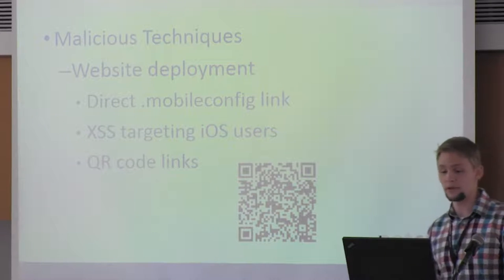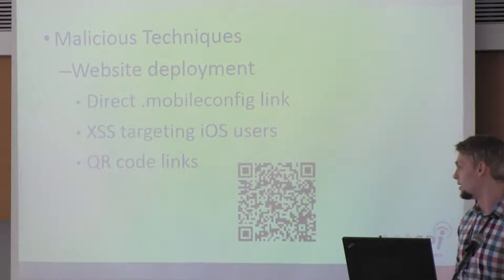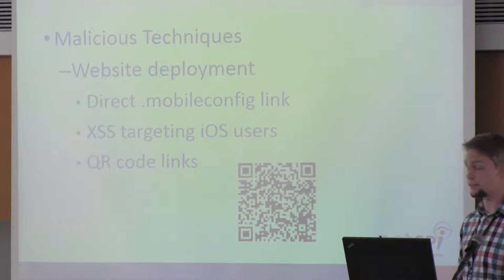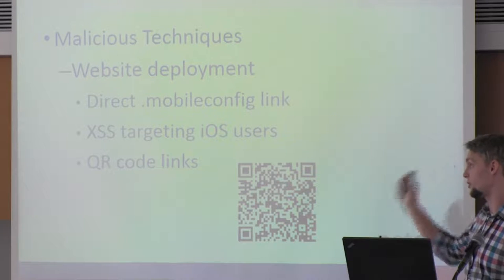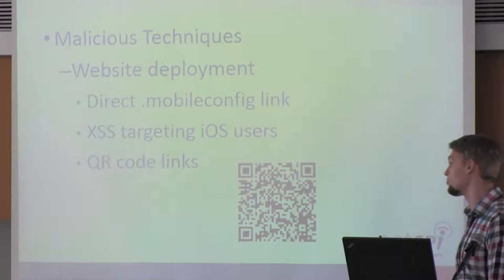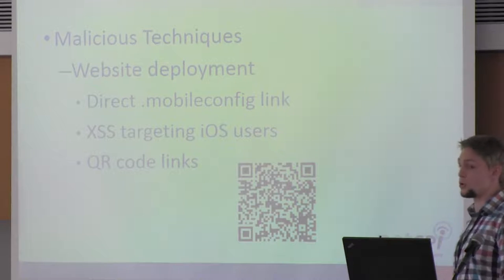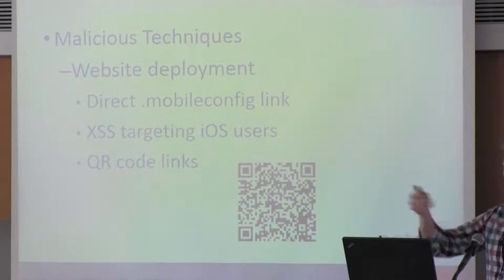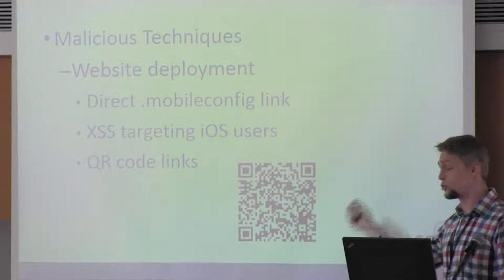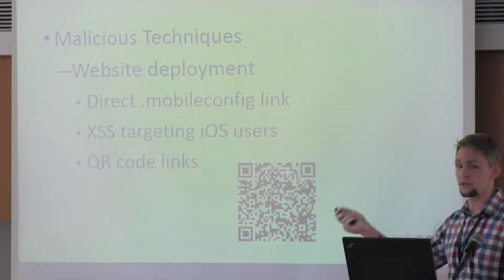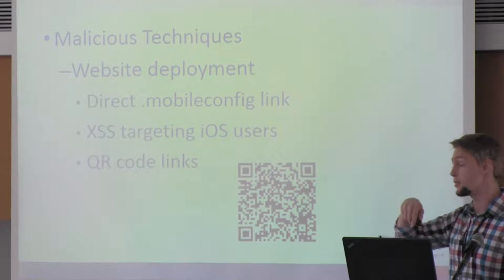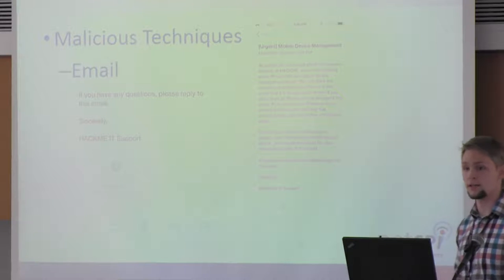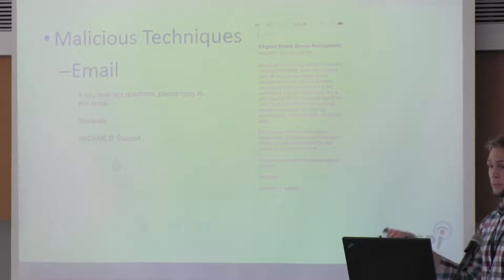There's also website deployment. For those who scanned that QR code, it should take you to the NetSpy blog. All it's going to do is set up the wireless access point and put a little web clip on your device. You can put out a direct mobile config link — some kind of social engineering to get people to open a link on their iPhone. XSS can serve up malicious mobile configs on mobile-only sites using QR code links. Through direct URLs or emails, this is handy for on-site social engineering.